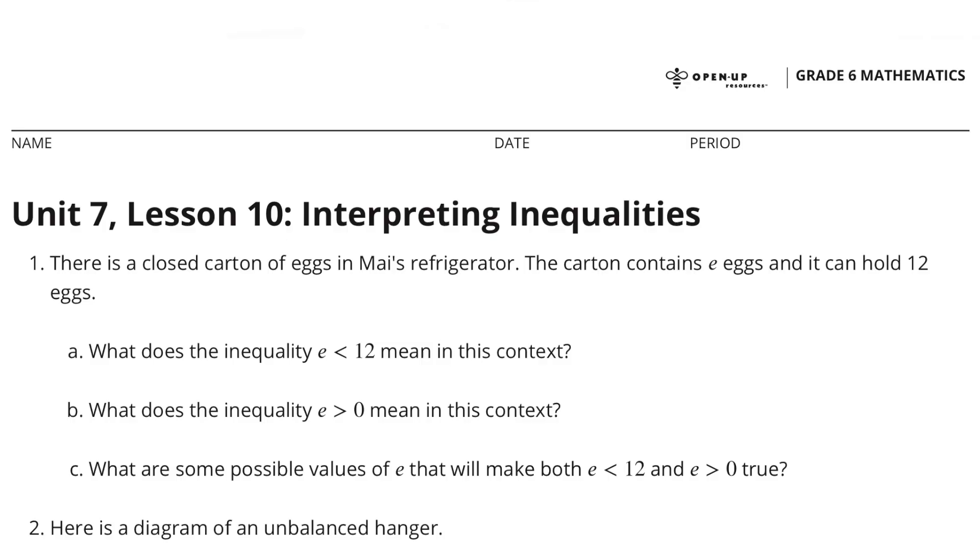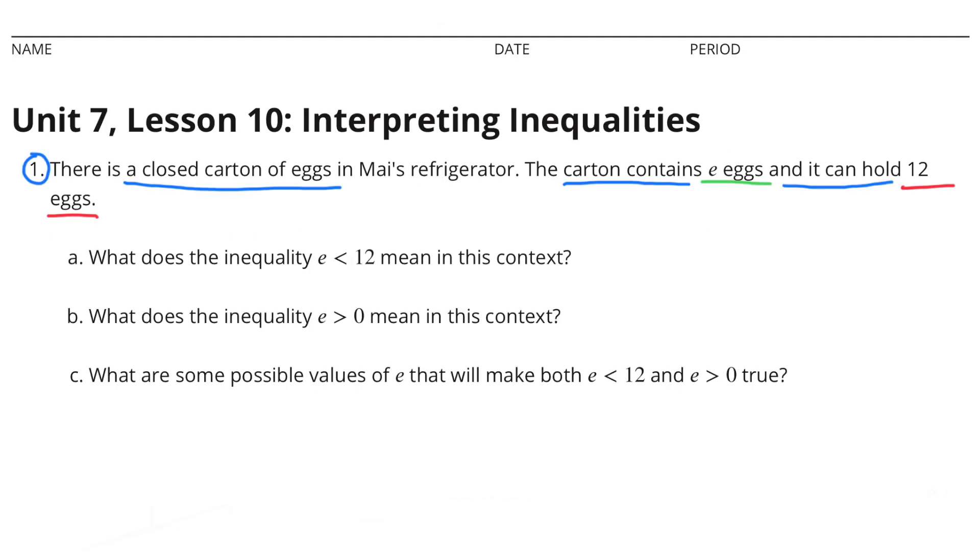Unit 7, Lesson 10: Interpreting Inequalities. There's a closed carton of eggs in Mai's refrigerator. The carton contains E eggs, and it can hold 12 eggs.